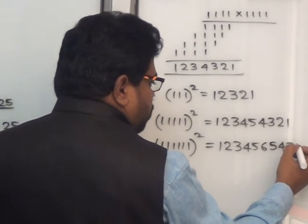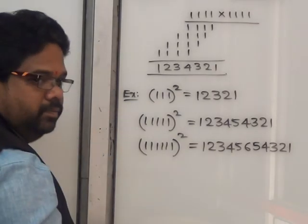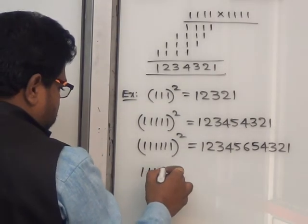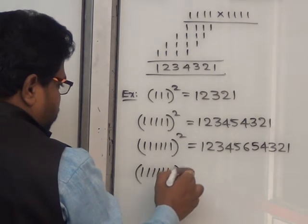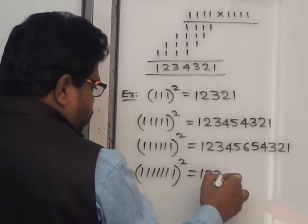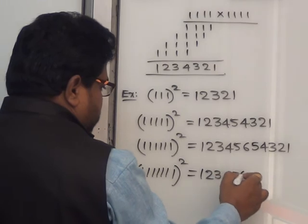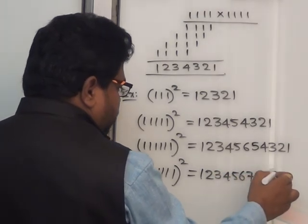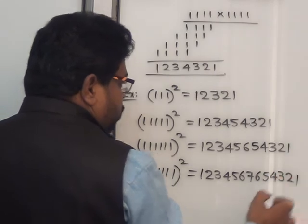We will decrease the value — 5, 4, 3, 2, 1. Is it how many? 7 ones here. 1111111 whole square — so 7 ones across. Count up: 1, 2, 3, 4, 5, 6, 7 — then decrease: 6, 5, 4, 3, 2, 1. How wonderful this technique is.